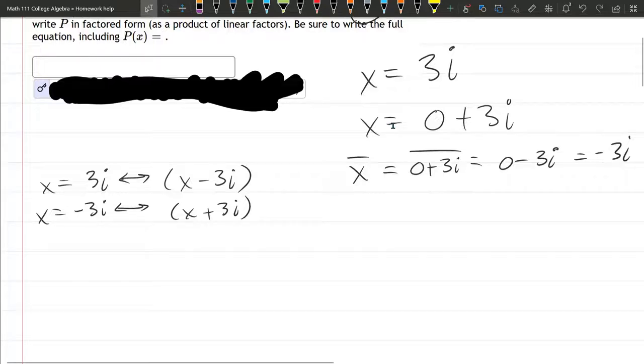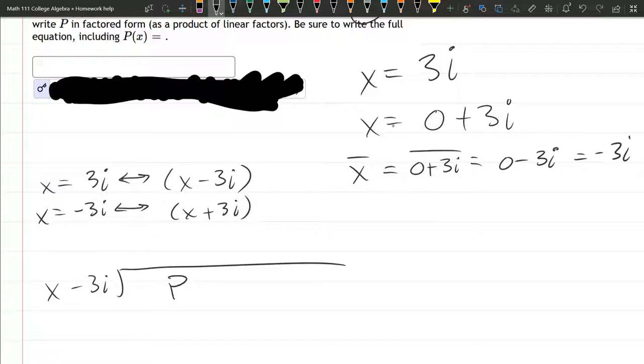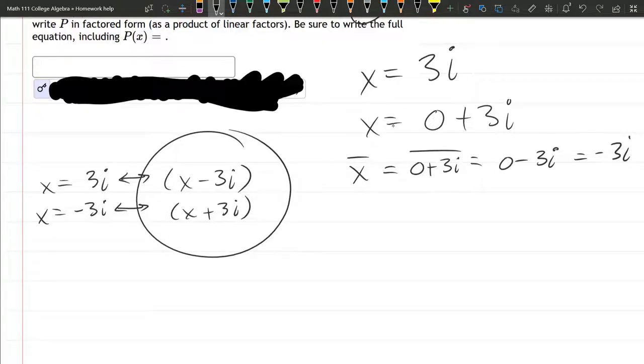It would be a big pain if you did x minus 3i dividing into P of x. I don't want to spend time writing P of x here. This would be very difficult to do. You're going to have to do a complex division, so that's really annoying. But what we can do is multiply the factors together and then divide by that product, and the good news is when we multiply these factors, there won't be an imaginary part.